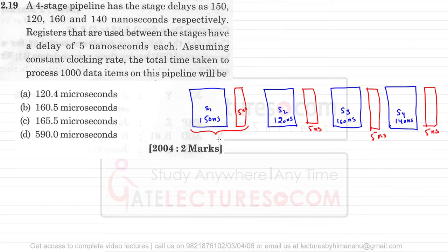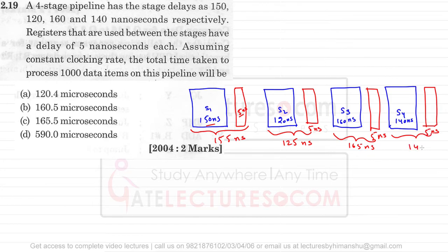So the effective delay for each stage becomes: the first stage has 150 + 5 = 155 nanoseconds, the second stage has 120 + 5 = 125 nanoseconds, the third stage has 160 + 5 = 165 nanoseconds, and the fourth stage has 140 + 5 = 145 nanoseconds.